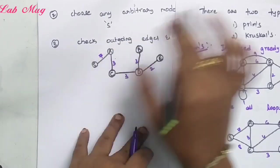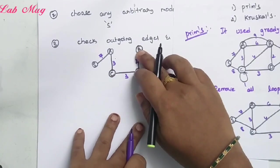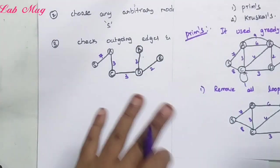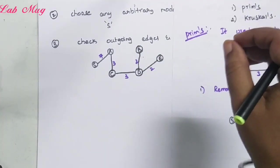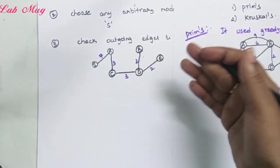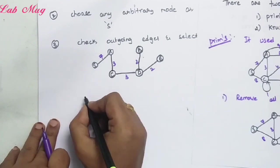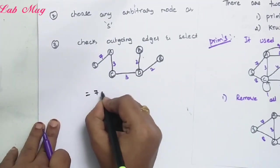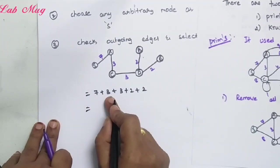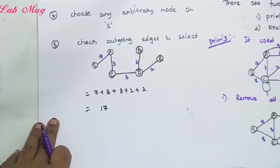The remaining edges — C to B, A to B, S to C — all would form connections (loops), so they cannot be added. All processes are now complete. Even the E edge cannot be taken because it would form a connection. So this is the final minimum spanning tree. Now calculate the weights: 7 + 3 + 3 + 2 + 2. That is 7+3=10, 10+3=13, 13+2=15, 15+2=17. The total weight is 17.